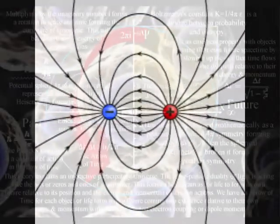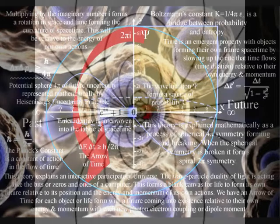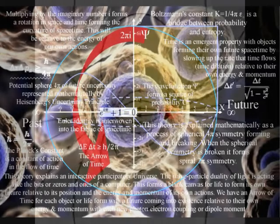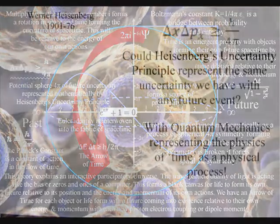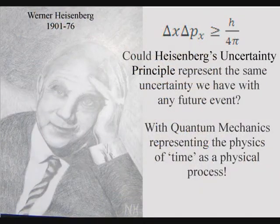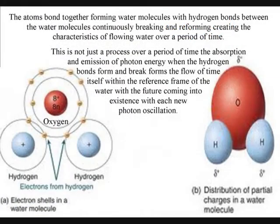But each step of the evolutionary process is based on the same universal process of continuous energy exchange or continuous creation. The easiest way to see how this process works in our everyday life is to look at how oxygen and hydrogen atoms bond together to form the characteristics of water.